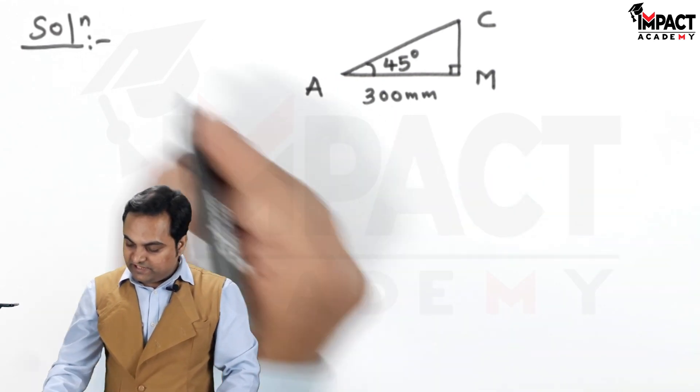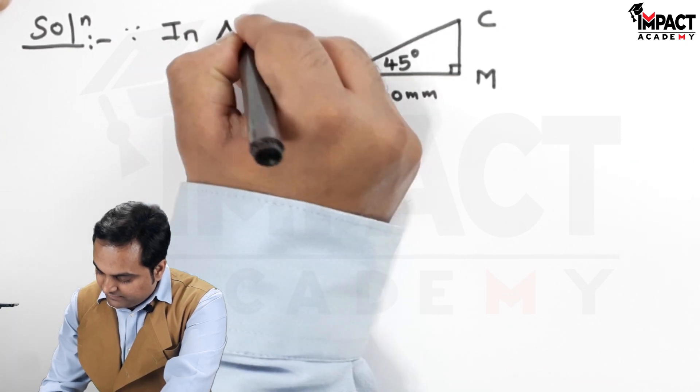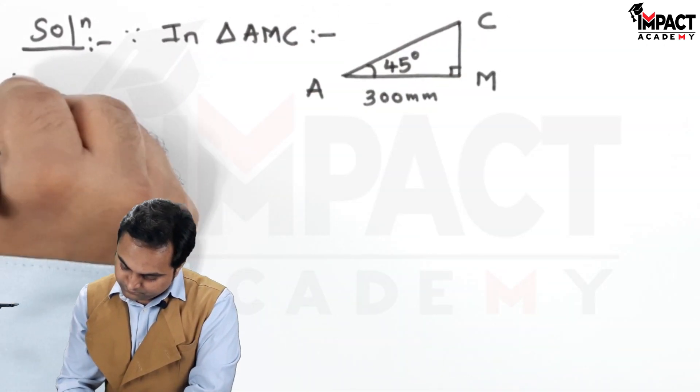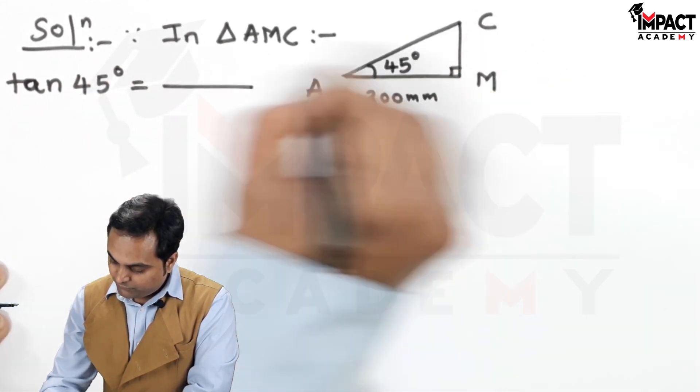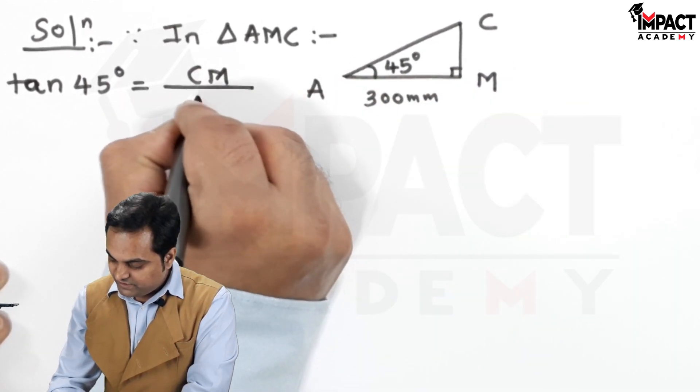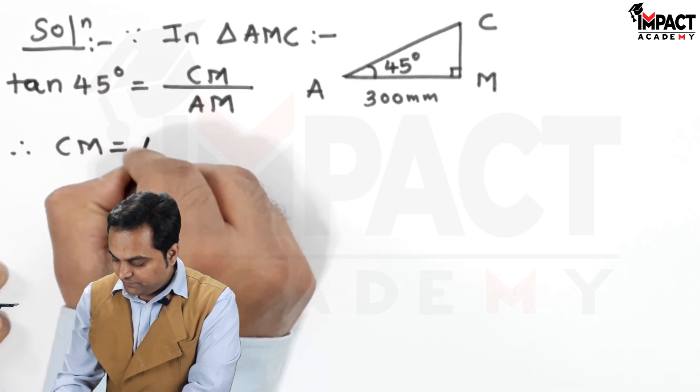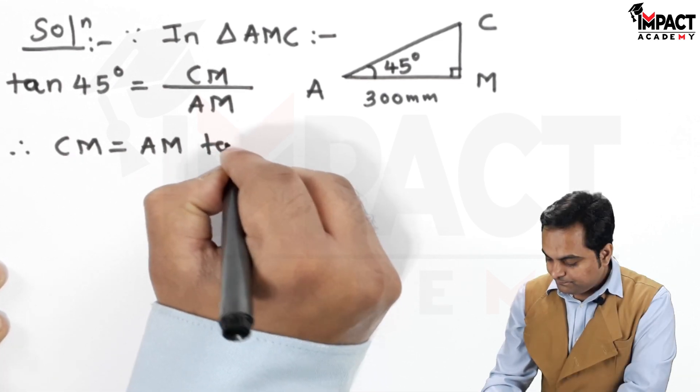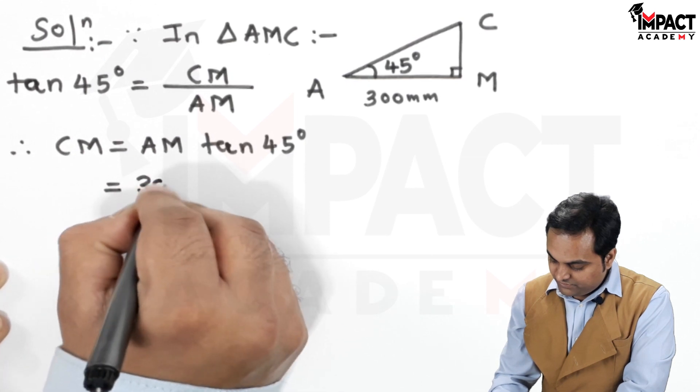And this value of A to M, it is corresponding to the length which is total length, that is 300 mm here. CM is the opposite of this angle and here this is adjacent side. So I would be using the formula of tan. That is, since in triangle AMC, tan theta that is tan of 45 degree is opposite side which is CM upon the adjacent side which is AM. Therefore, CM would be AM tan of 45. AM is 300.